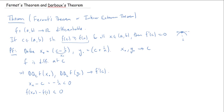So my difference quotient applied to x_n has numerator f(x_n) − f(C) ≤ 0 and denominator x_n − C < 0. A non-positive number divided by a negative number gives a non-negative result, so the difference quotient applied to x_n is greater than or equal to zero.